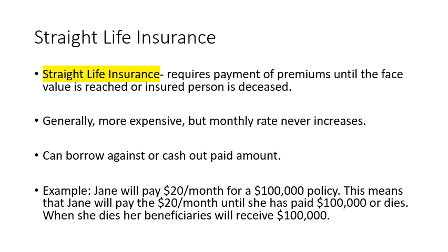In this video, I want to take a look at the difference between straight life insurance and term life insurance. Straight life insurance requires payment of premiums until the face value is reached or the insured person is deceased. You have to make regular premium payments until you get to the face value, or until you die. Straight life insurance is generally more expensive.